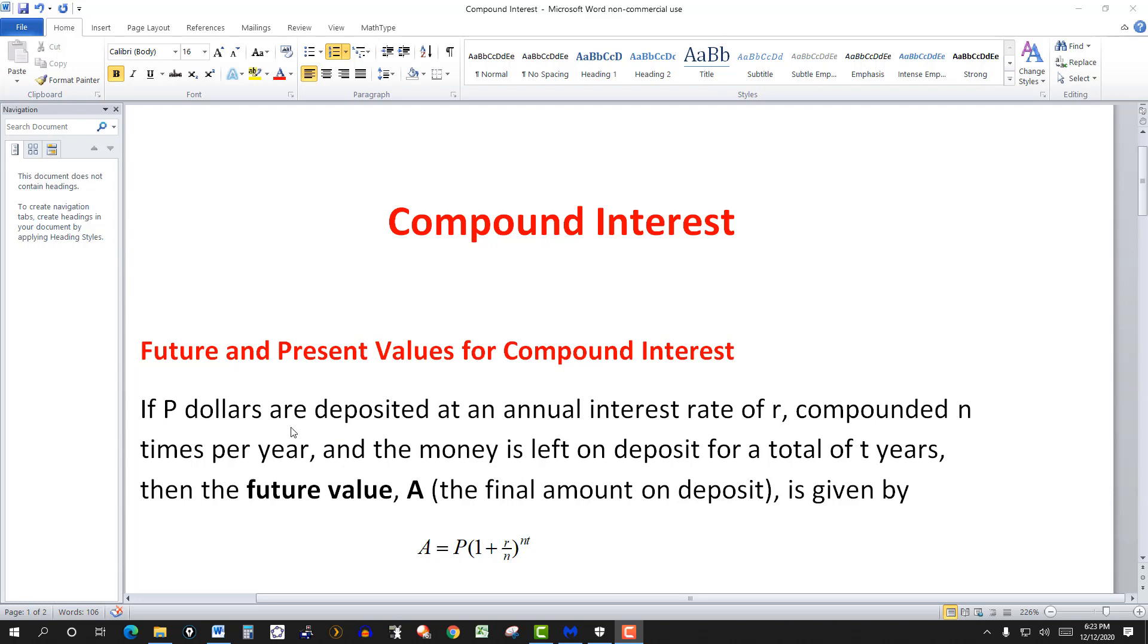If P dollars are deposited at an annual interest rate of R, compounded N times per year, and the money is left on deposit for a total of T years, then the future value A, the final amount on deposit, is given by this formula.